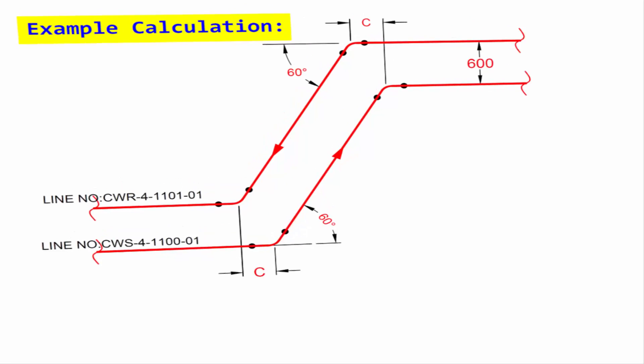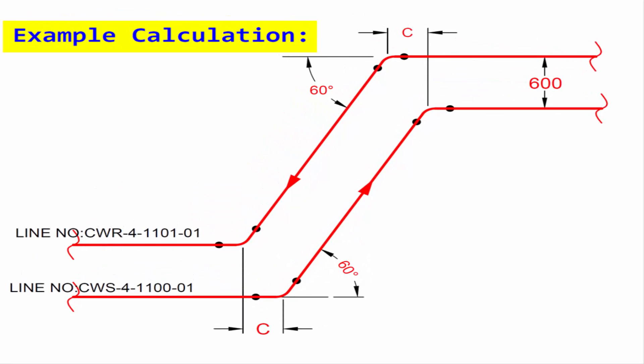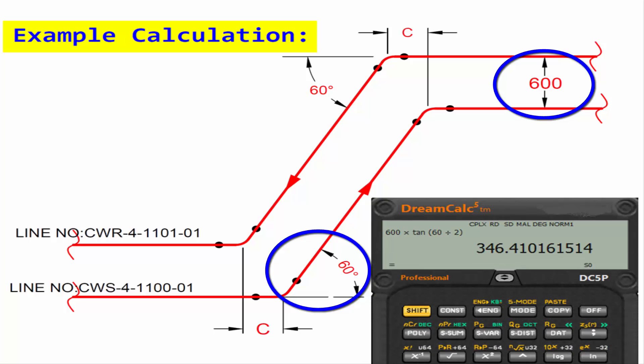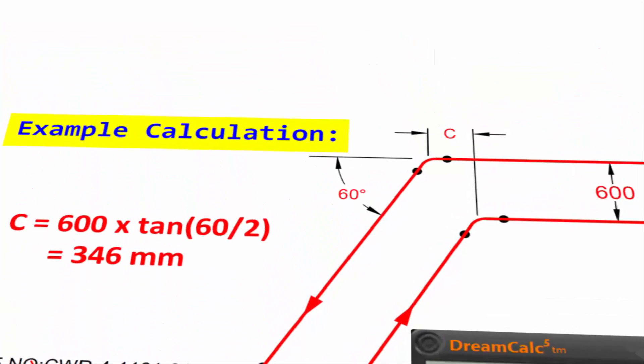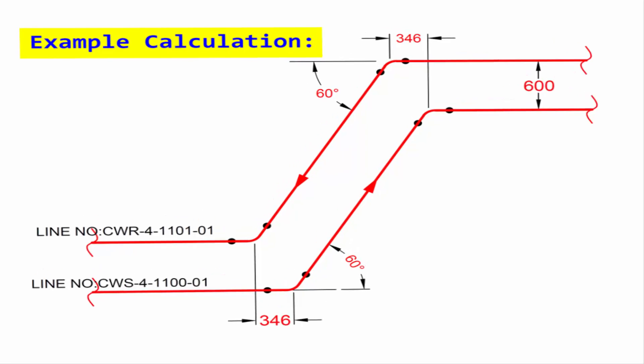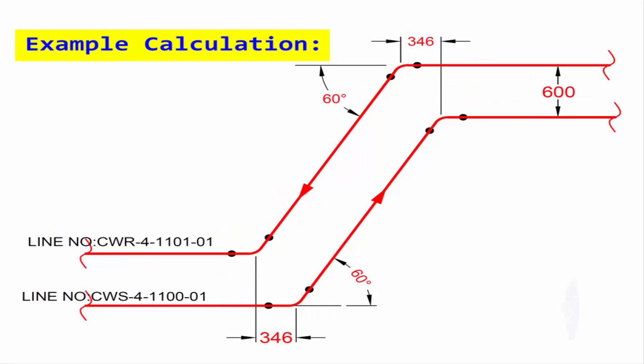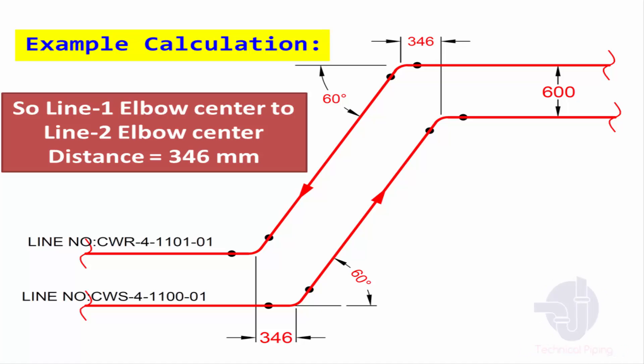Example calculation: In the given isometric drawing, spread distance is 600 millimeters and rolled elbow degree is 60 degrees. Enter the values in scientific calculator. So line one elbow center to line two elbow center distance is 346 millimeters.